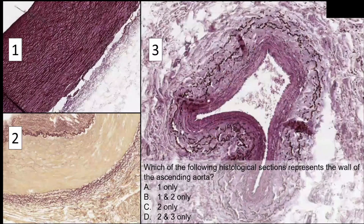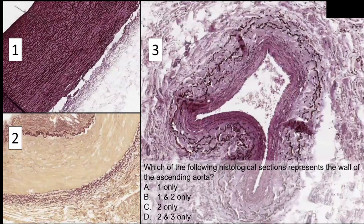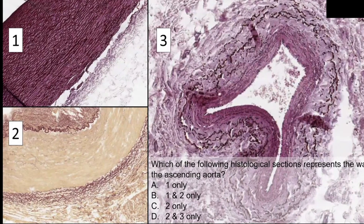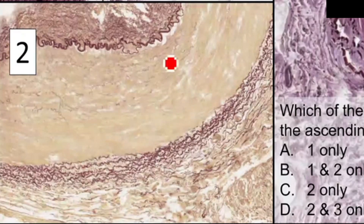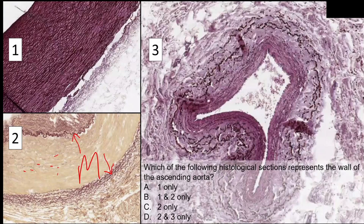Which of the following histological sections represents the wall of the ascending aorta? The ascending aorta is which type of artery? It is an elastic artery. Is it number two? In number two, this is a special stain showing elastic fibers only. I can see the internal elastic lamina and external elastic lamina, with few elastic fibers in the tunica media, but most of the tunica media is not taking the stain because it has smooth muscle fibers. This is a muscular artery, which is not the type of the ascending aorta, arch of aorta, descending aorta, brachiocephalic trunk, common carotid, or subclavian arteries — all these are elastic arteries.